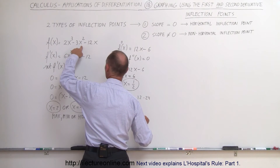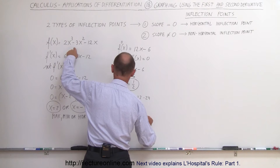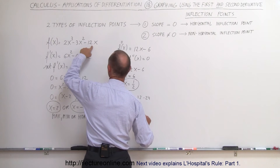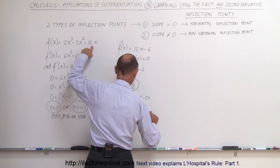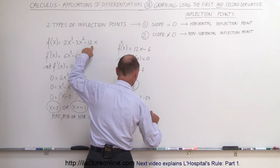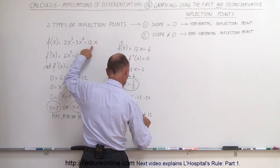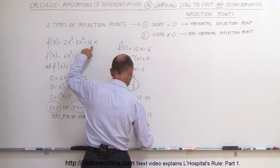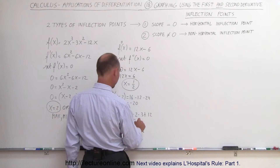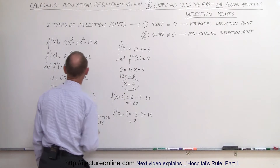Minus 1 squared is positive 1, times a negative 3 is minus 3. And minus 1 times minus 12 is a plus 12. So, this is equal to 7. Yes, it is: 7.